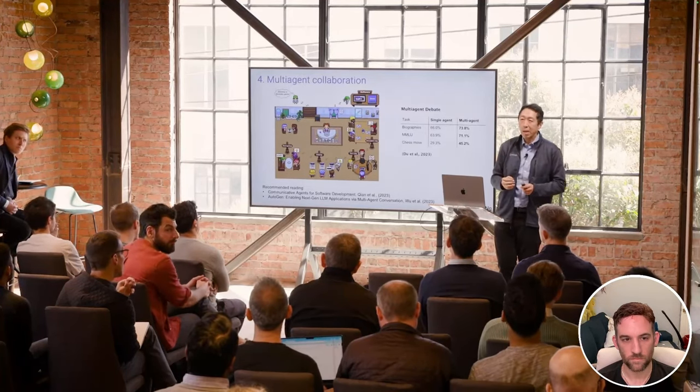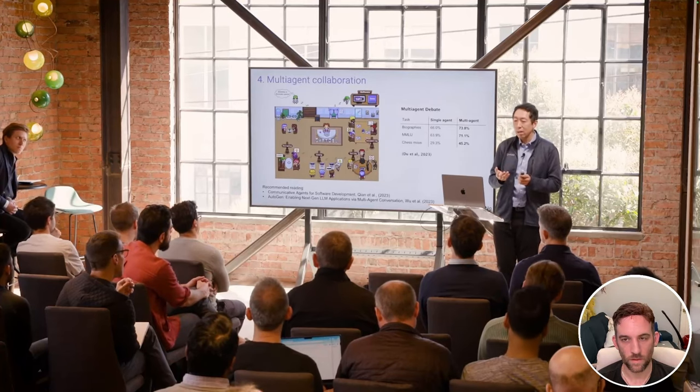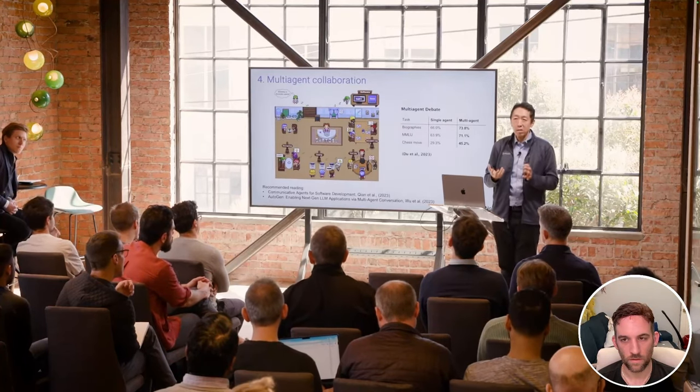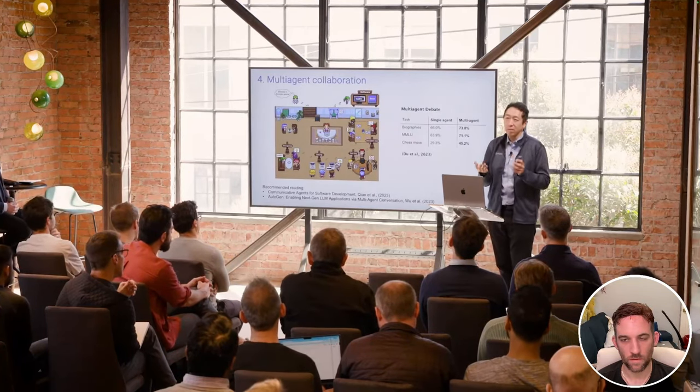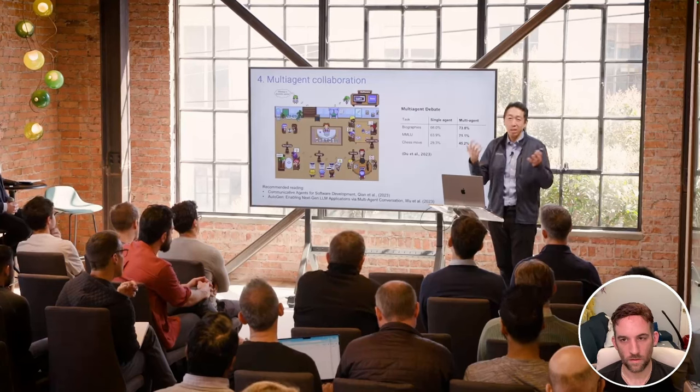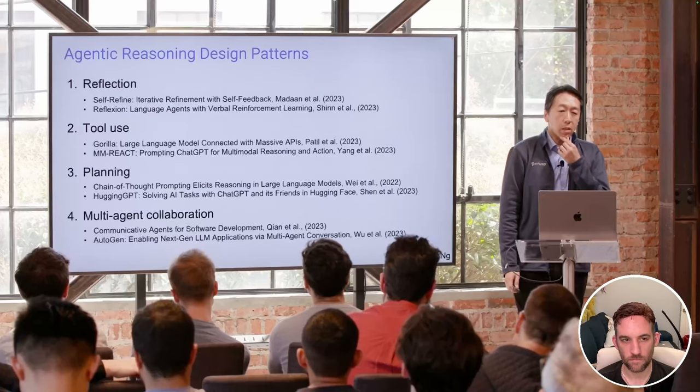Another design pattern variant is multi-agent debate — for example, having ChatGPT and Gemini debate each other — which actually results in better performance. Getting multiple agents to work together has proven to be a powerful design pattern.